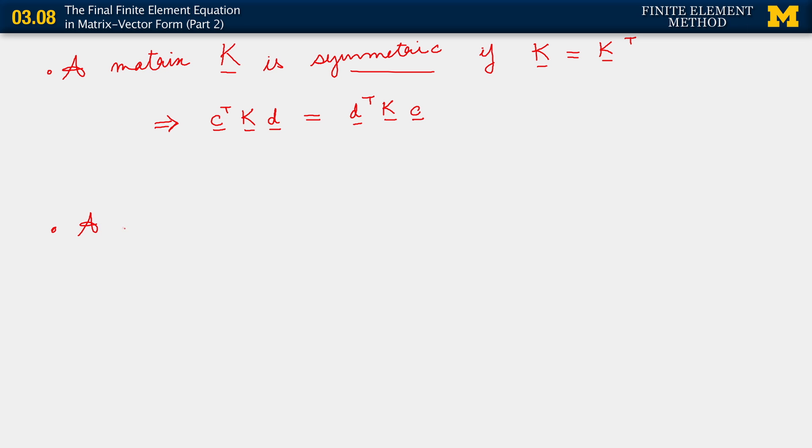Now, a matrix is positive definite. And once again, let's use the same matrix K. A matrix K is positive definite if...